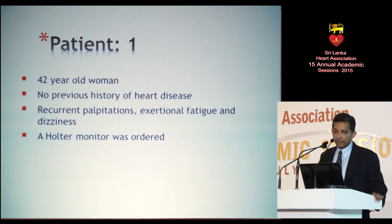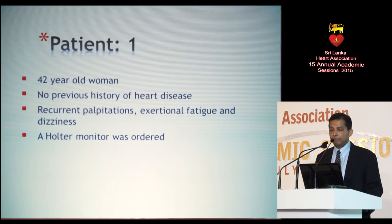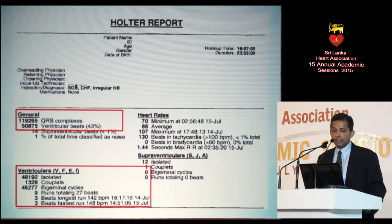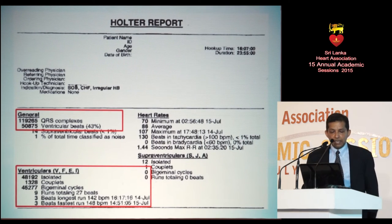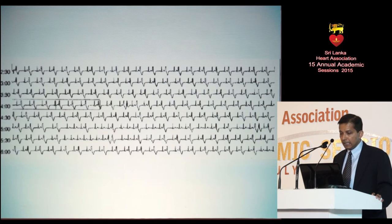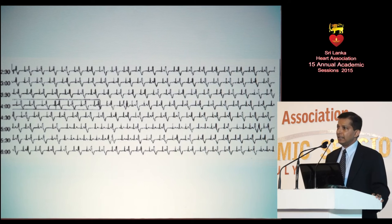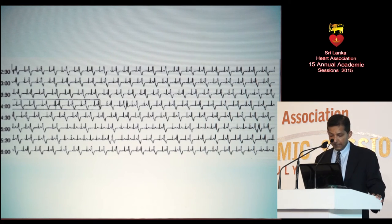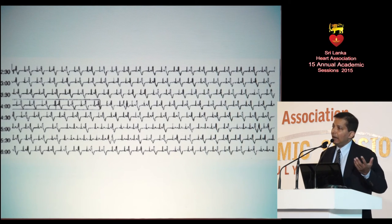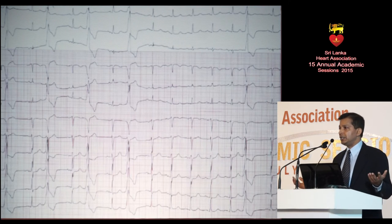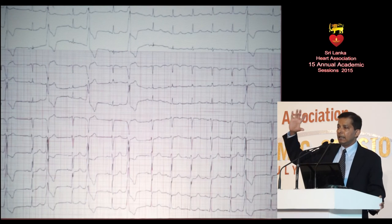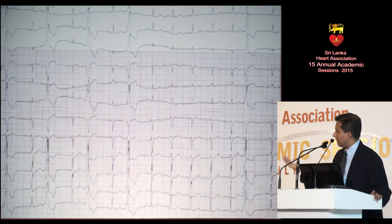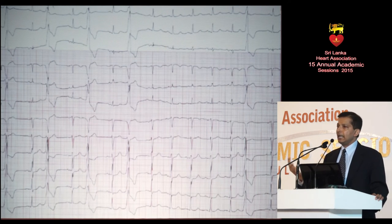Let me illustrate with some case scenarios. Patient number one is a 42-year-old woman with no previous heart disease, presenting with recurrent palpitations, exertional fatigue, and dizziness. A Holter revealed that out of 119,000 beats, 43% were PVCs, as highlighted in the top red box. This is an example of a Holter in bigeminy, sometimes trigeminy — 43% is quite high. By looking at these PVCs, we have an idea of the percentage, but where do they come from? A 12-lead ECG is absolutely useful, so try to capture PVCs in all 12 leads.